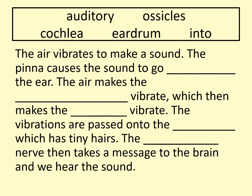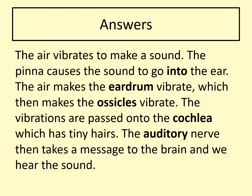Here's a little recap of how the ear works. Please feel free to pause the video and write down your answers — it would be best if you write whole sentences. The answers: the air vibrates to make a sound; the pinna causes the sound to go into the ear; the air makes the eardrum vibrate, which makes the ossicles vibrate; the vibrations are passed on to the cochlea, which has tiny hairs; the auditory nerve then takes a message to the brain and we hear the sound.